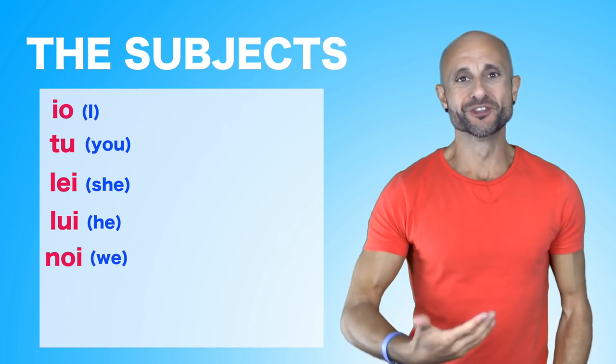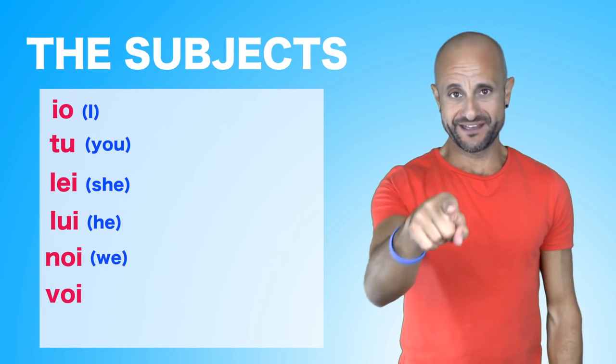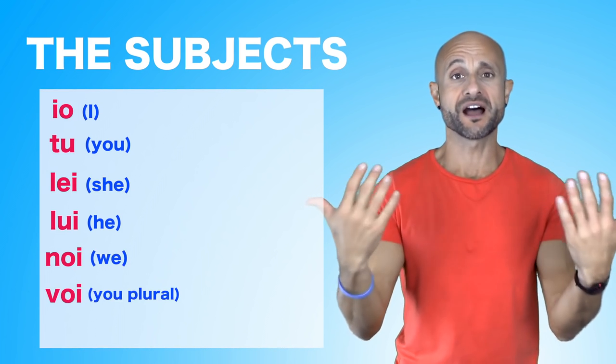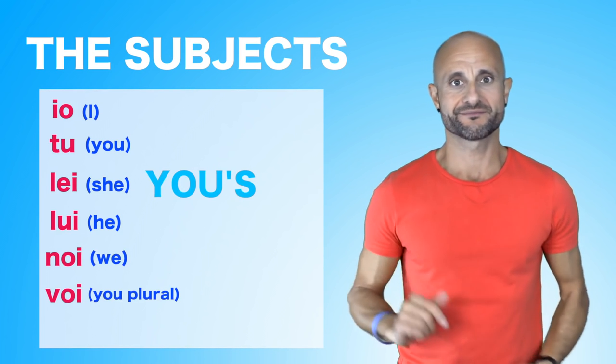Noi, that's us, that's we. Noi. Voi. Voi means you plural. You guys, y'all, yous, like...